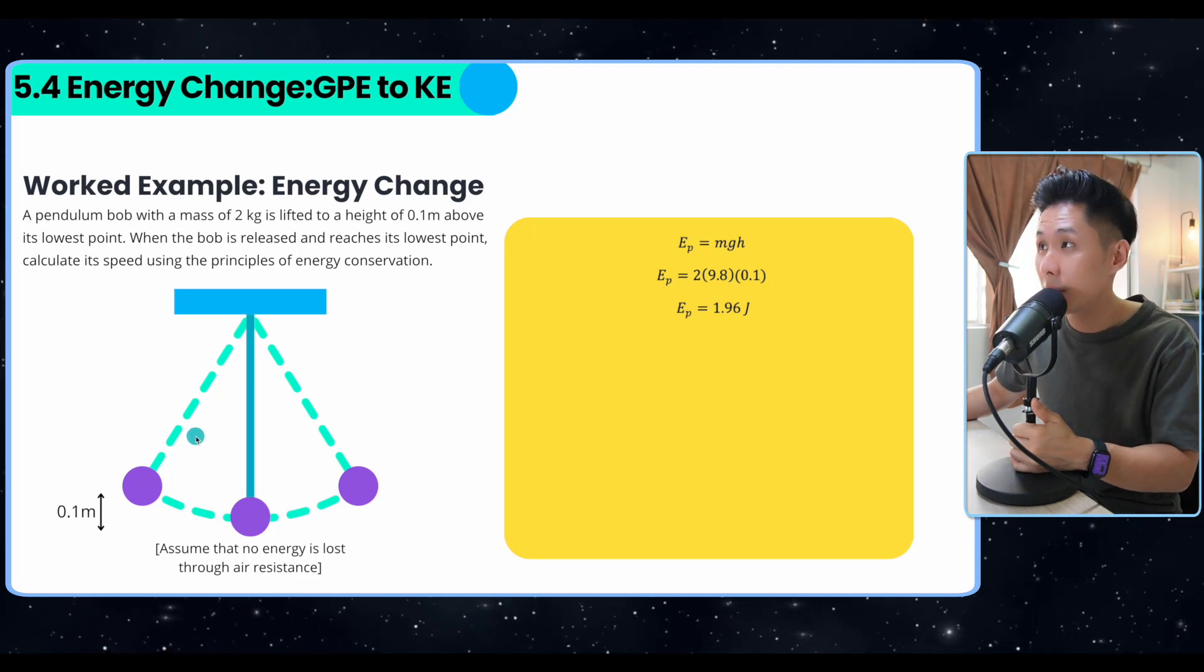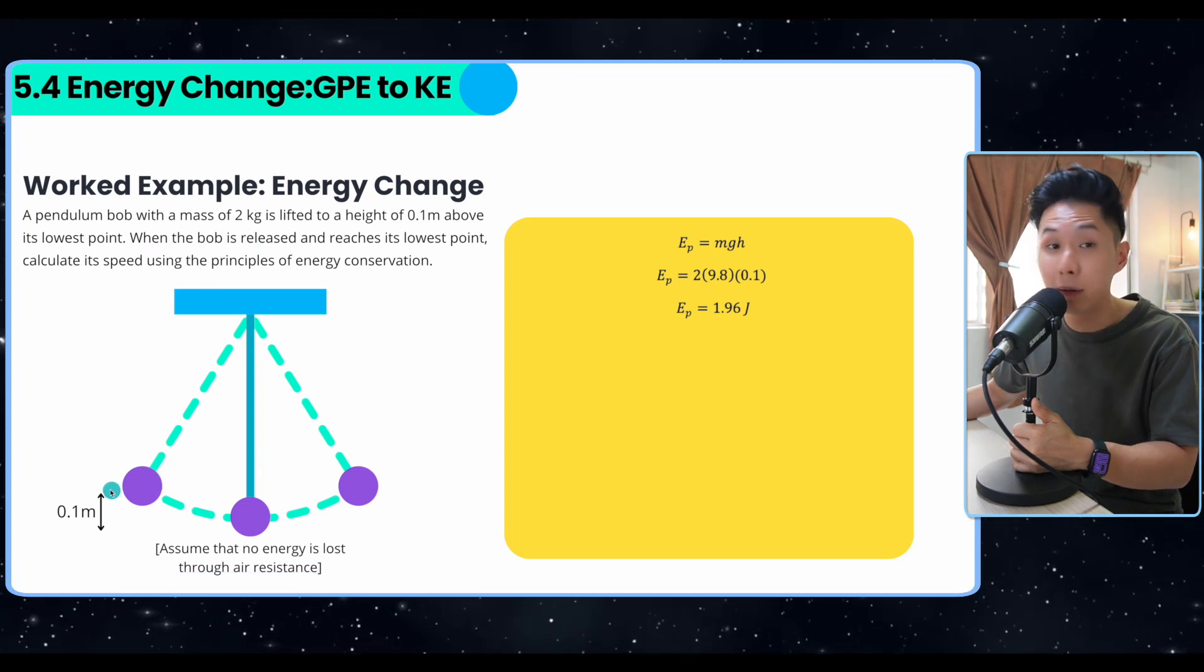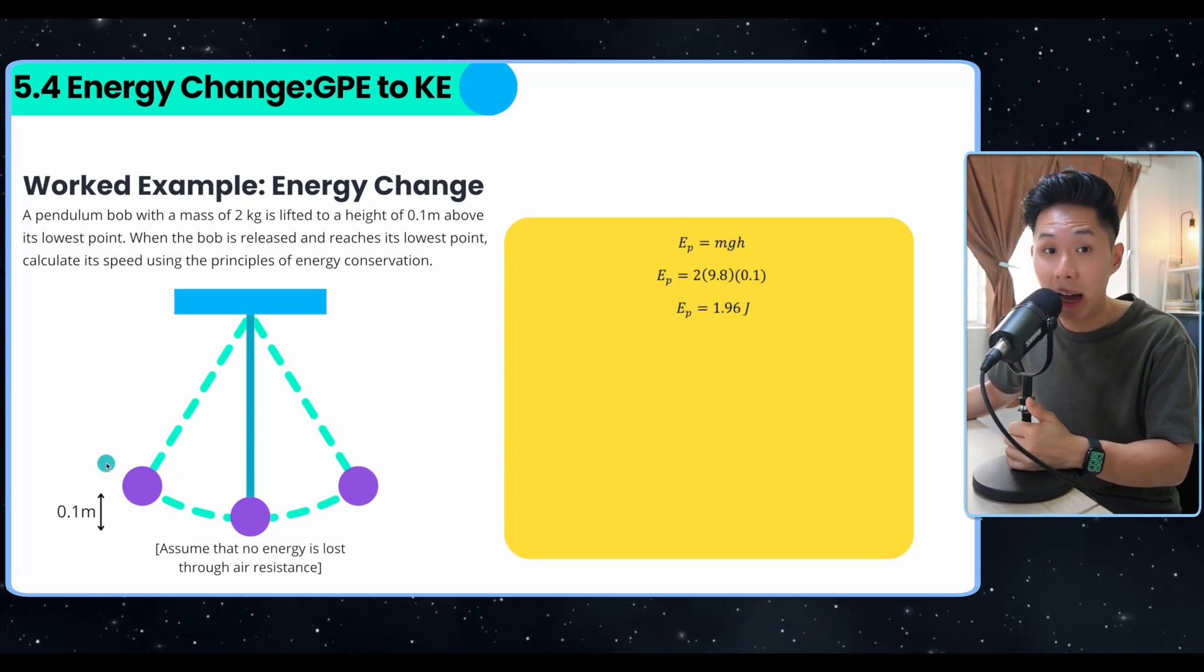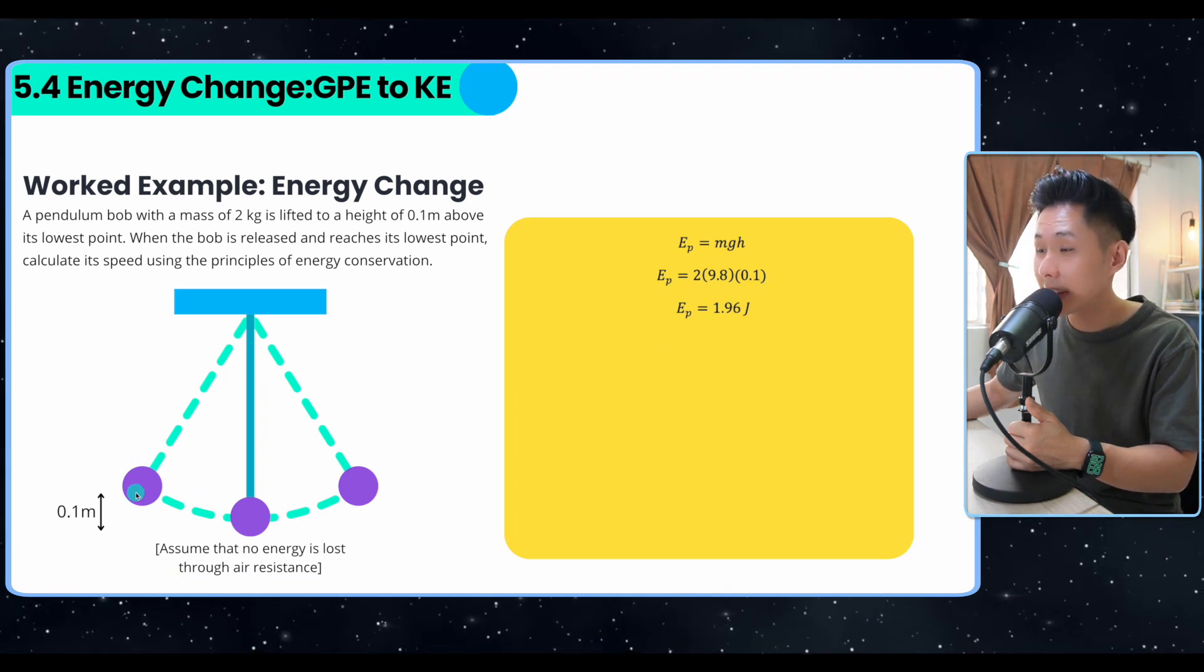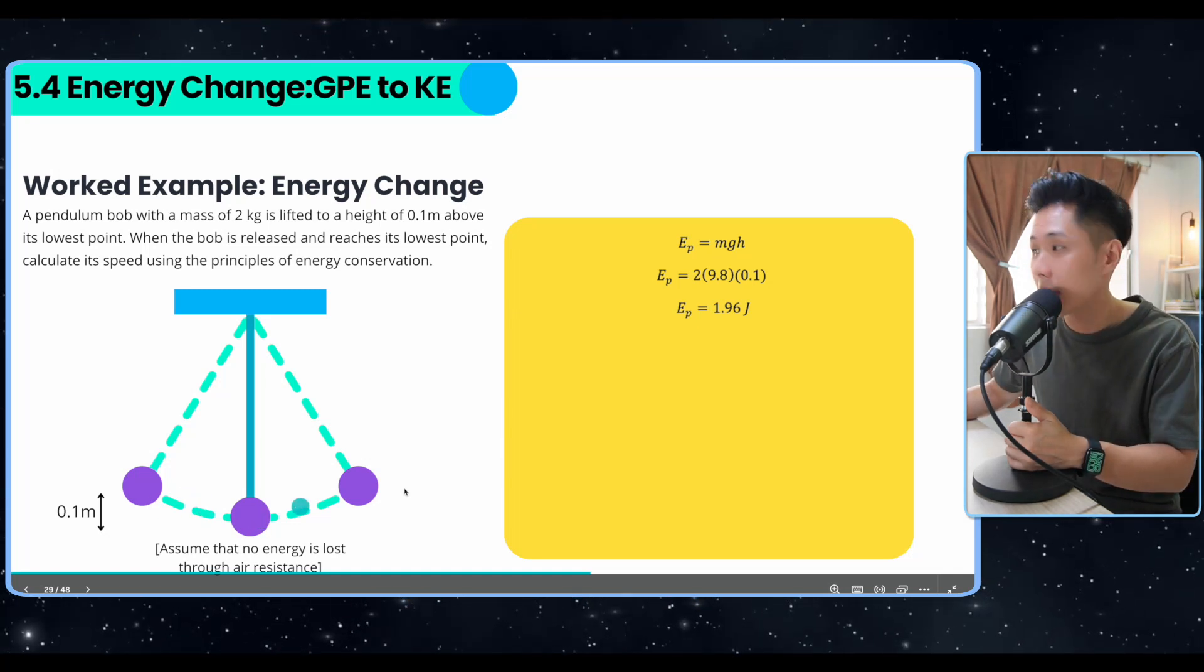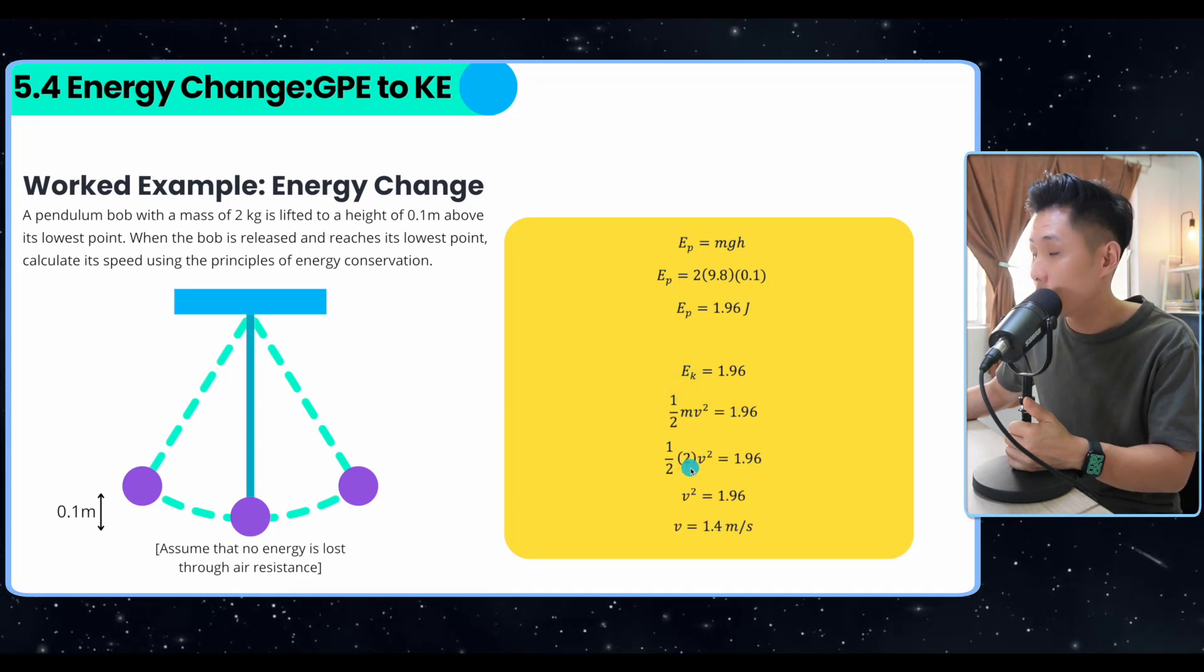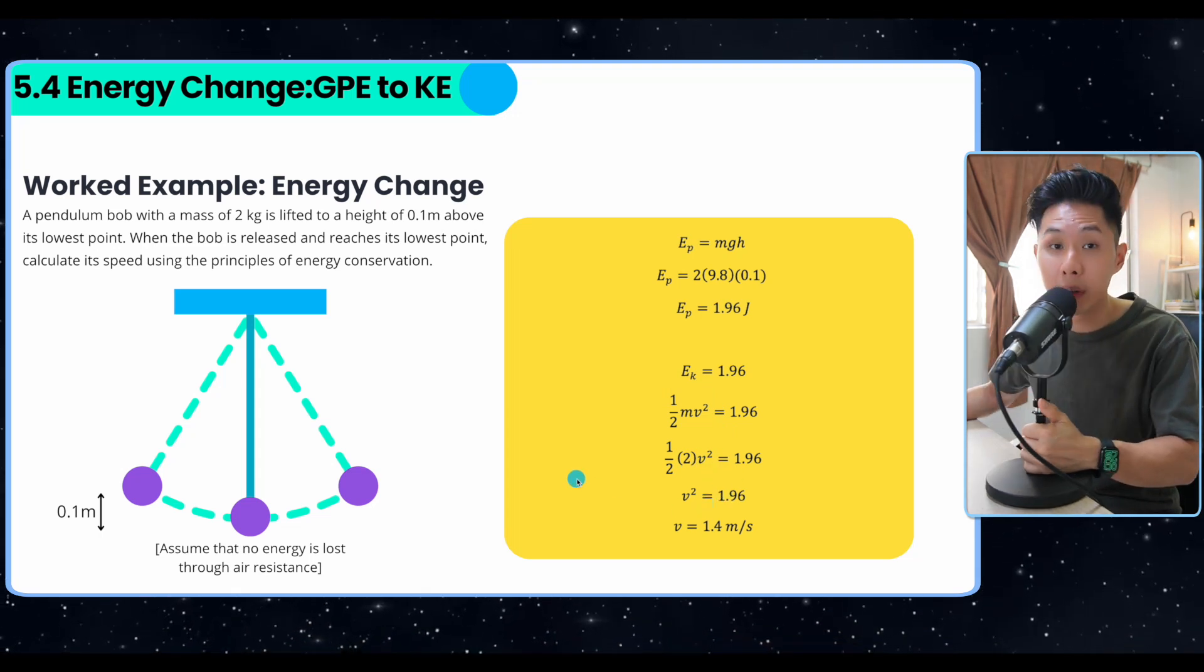Now let's look into another example that involves energy change. A pendulum bob with a mass of two kilograms is lifted to an elevation of 0.1 meter. So we have to calculate its speed when it arrives at the lowest point. So let's find out what's the MGH of it when it's at the highest point. We can calculate that using 2 multiplied by 9.8 times 0.1. So we know that as they move from the highest point to the lowest point, because no energy is lost, all energy shall be converted to kinetic energy. So we can safely say that the kinetic energy is also 1.96. And then I will use the kinetic energy formula, substitute the known value, and make the unknown value the subject to find out the velocity of the ball as it reaches the lowest possible point.